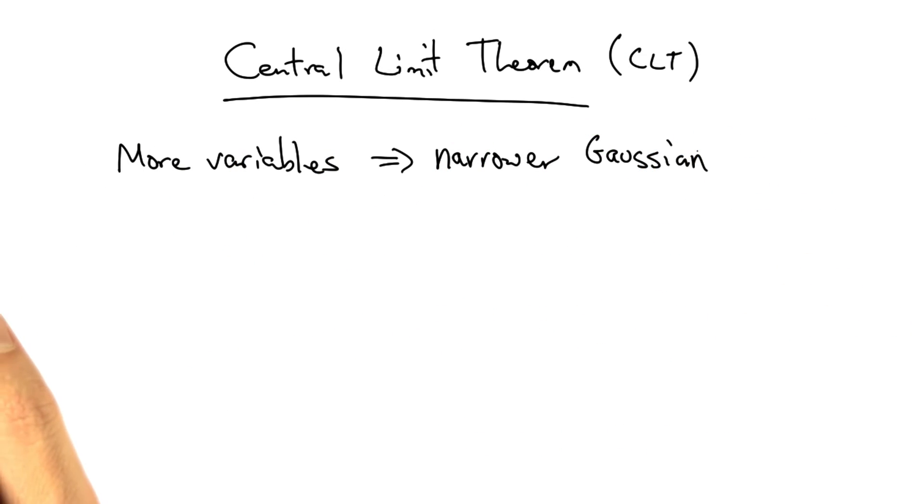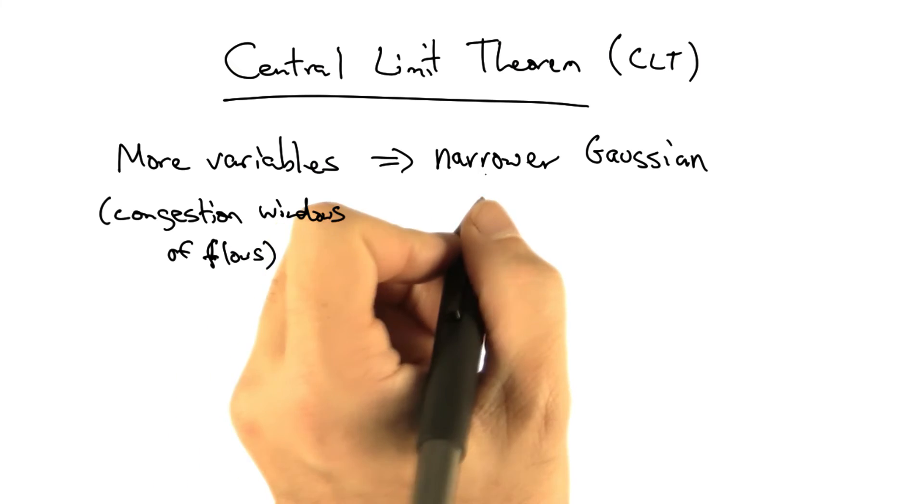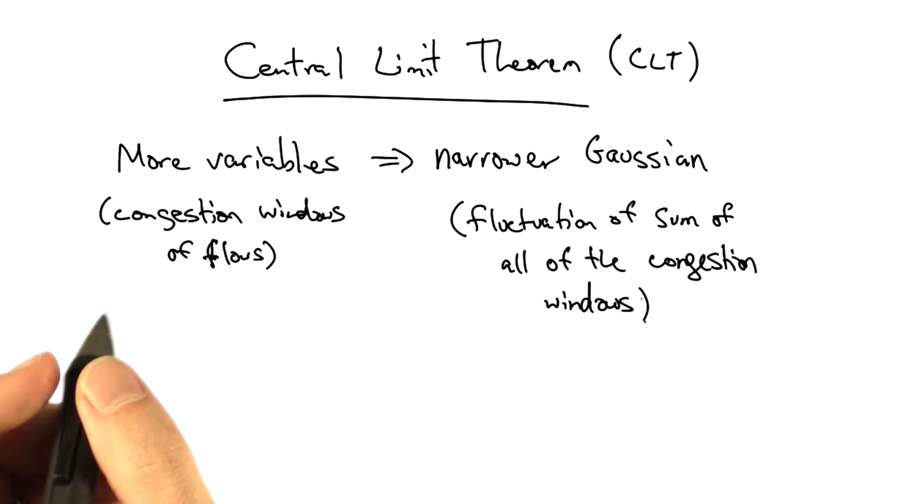The central limit theorem tells us that the more variables that we have, and in this case, the number of variables are the number of unique congestion windows of flows that we have, the narrower the Gaussian will be. In this case, the Gaussian is the fluctuation of the sum of all of the congestion windows.